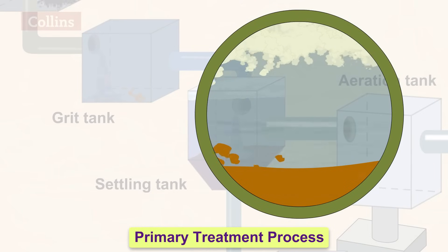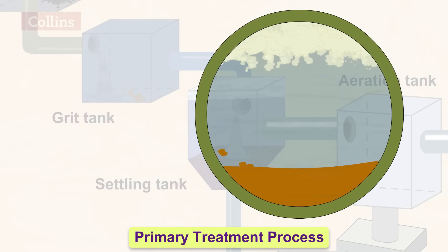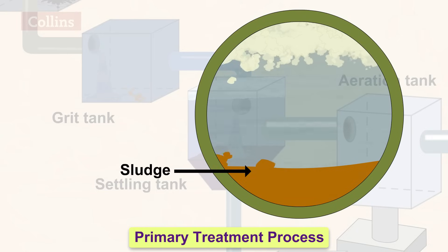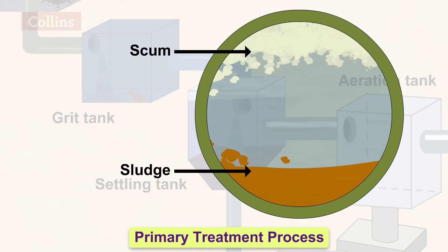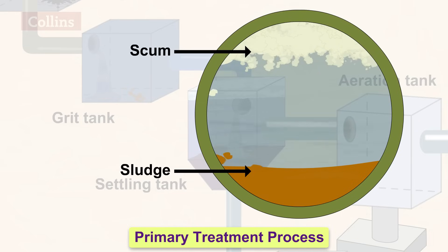Wastes such as soaps, oils and grease rise to the top of the wastewater. The waste material that settles down at the bottom is called the sludge and the floatable material is called the scum. Scum is then removed using a skimmer and sludge is removed with a scraper every few days. The water that is left out is called the clarified water.